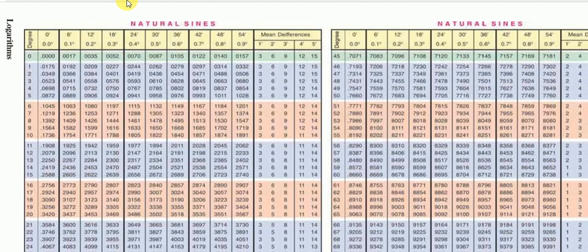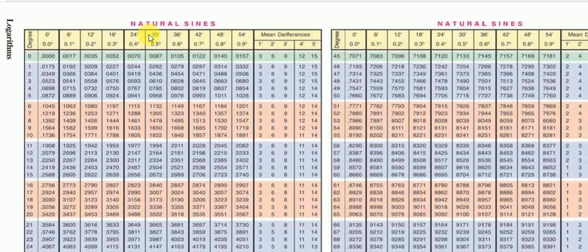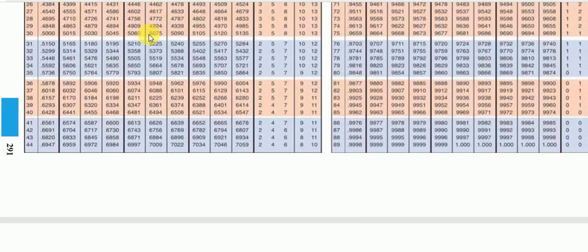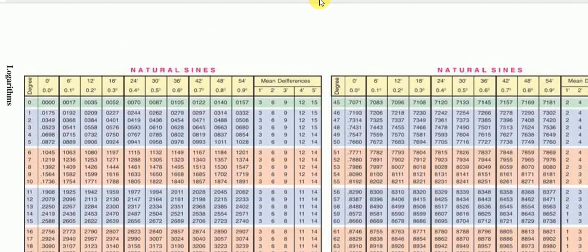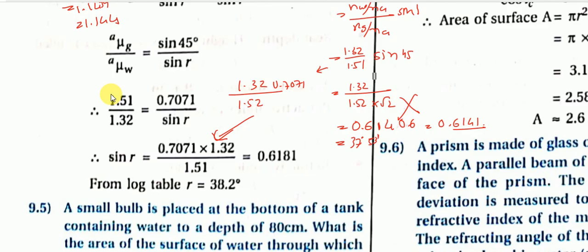Using the sine table, sin(r) ≈ 0.6181 corresponds to approximately 38 degrees 11 minutes. Converting 11 minutes to degrees: 11/60 ≈ 0.18 degrees. So the final angle of refraction is approximately 38.2 degrees.